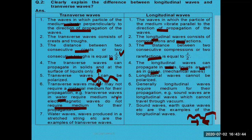Sound waves are longitudinal waves which cannot travel through a vacuum. If you are standing on the surface of the moon, two persons standing close to each other would be unable to hear each other because there is no medium. That is why astronauts in space communicate using radio waves, because radio waves are transverse in nature and can travel through a vacuum.